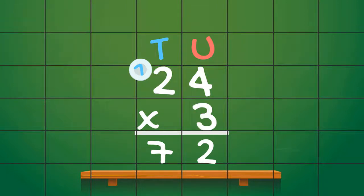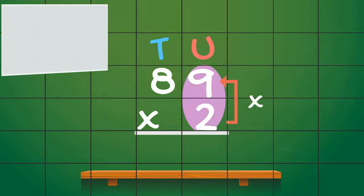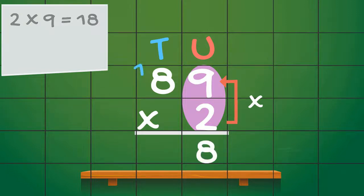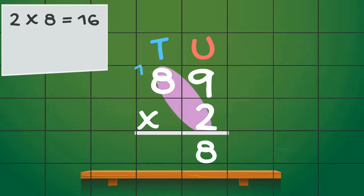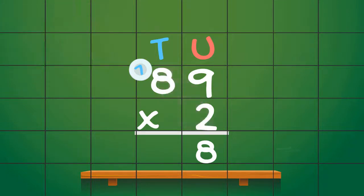The only small difference is when you have a sum like this. All of the steps are the same until you get to the very last stage. So 2 multiplied by 9 is 18. We write down the unit and carry the 10. Then we say 2 multiplied by 8 is 16, and when we add the carried number we get 17. In this case, we write down the 7 in the tens column and carry the 1 to the next column, which is the hundreds column.